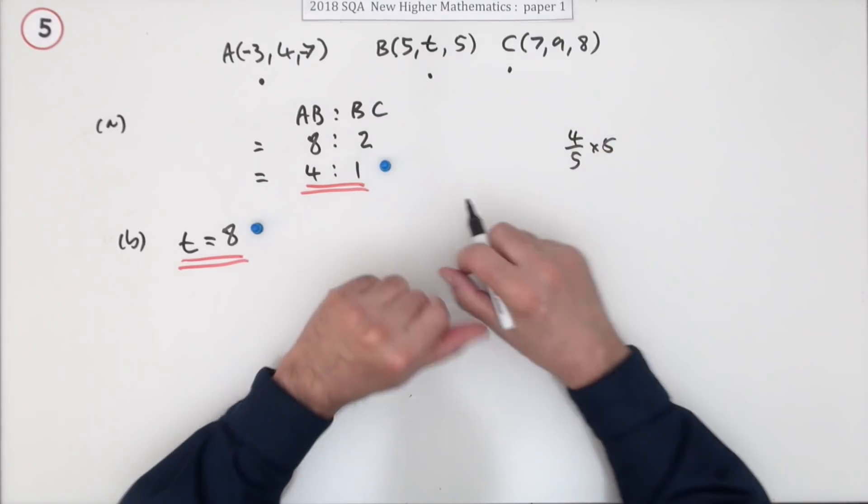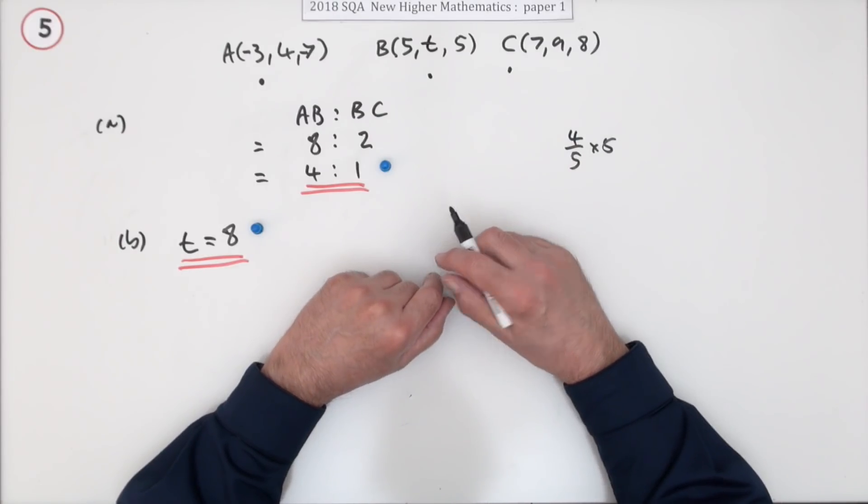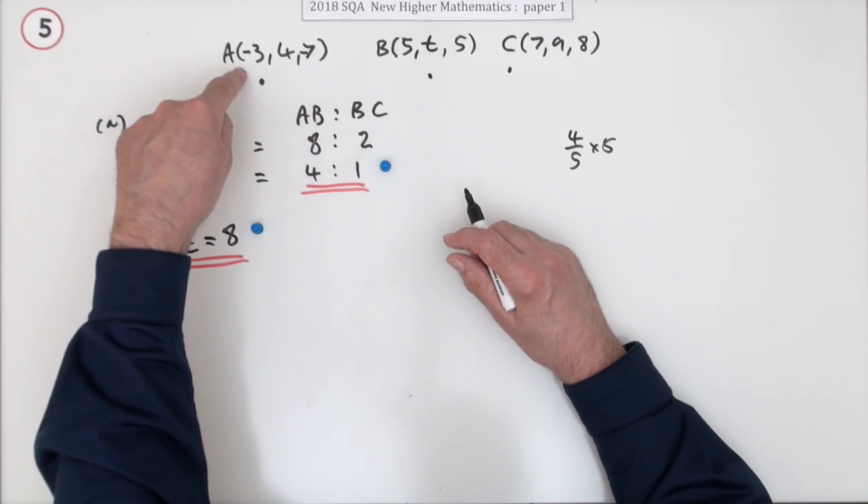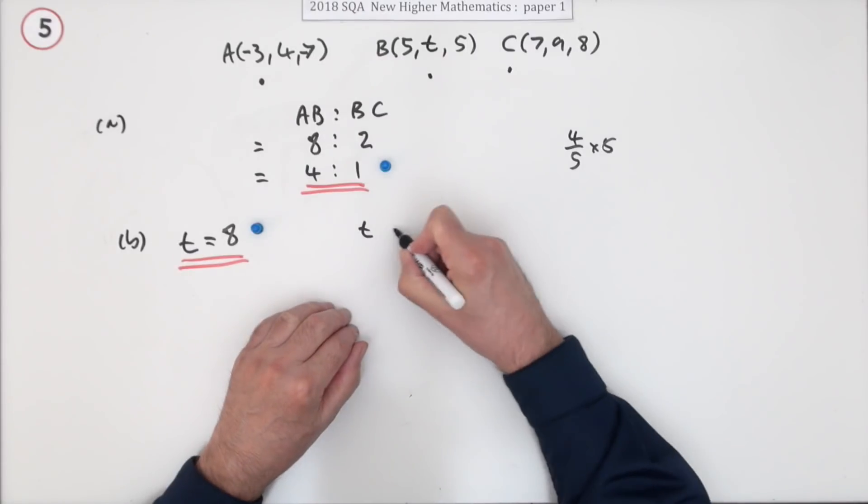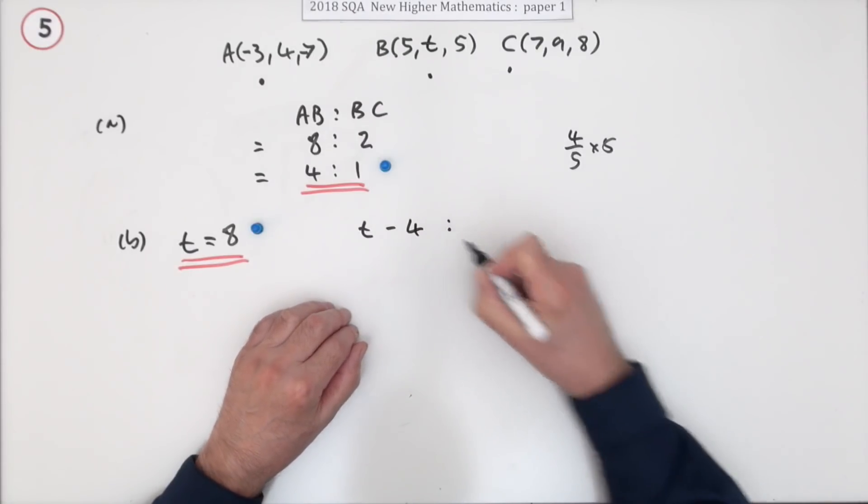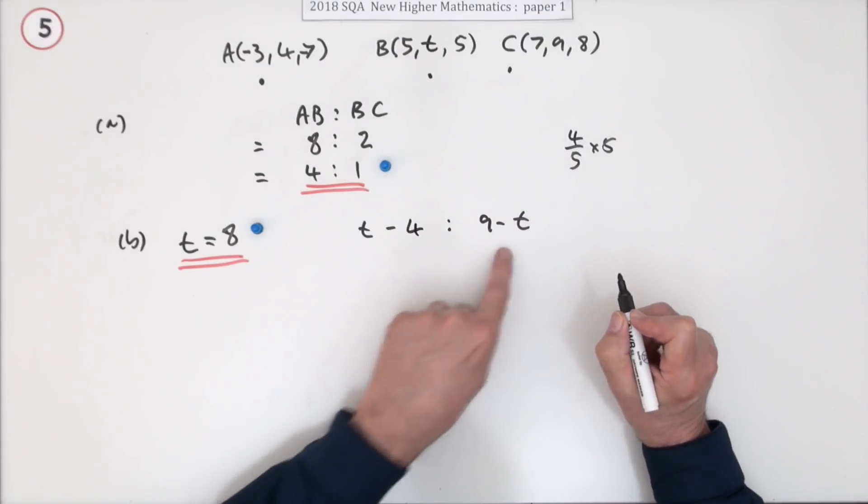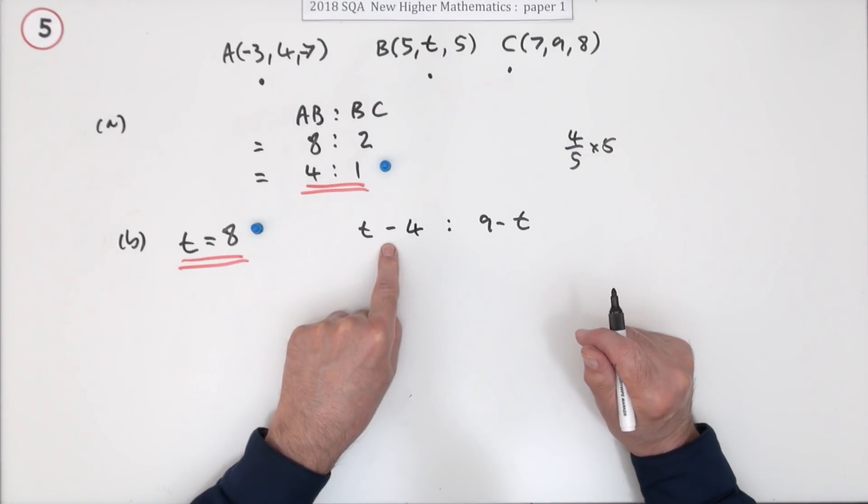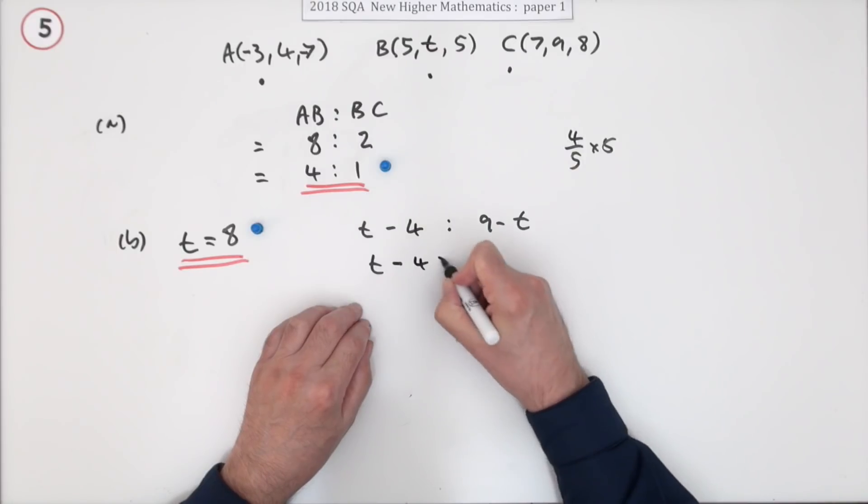However, you might think that was a bit too chancy doing all that in your head, and you may want to set it out. If you wanted to set it out, do it with the y components. How far is it from four to T? That's T minus four. How far is it from T to nine? That's nine minus T. They're in the ratio of four to one, so this one has to be four times bigger than that one. T minus four should be four times nine minus T.